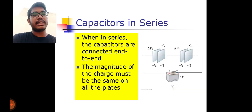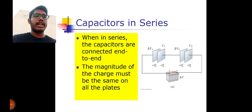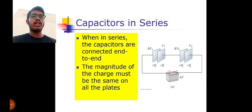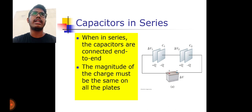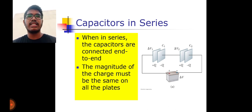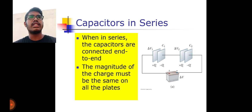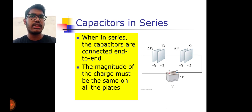Now capacitors in series: capacitors are connected end to end. The magnitude of the charge must be the same on all capacitors. The charge in series capacitors is always the same, but the potential difference will be different. Just as with resistors — in series, current is the same but potential difference differs; in parallel, current differs but potential difference is the same. The same applies to capacitors.